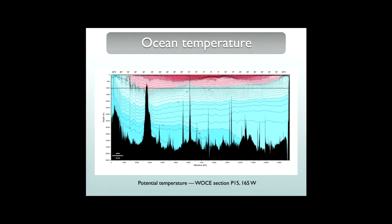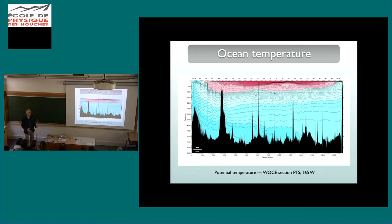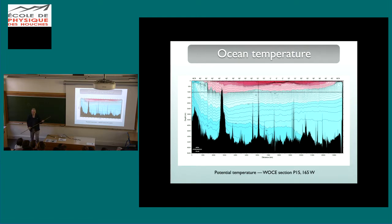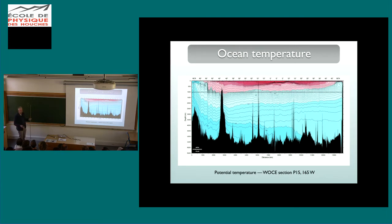First, we want to know what the deep ocean is. I'll start with an operational definition. This is a section across the Pacific Ocean collected during the World Ocean Circulation Experiment in the 1990s — a modern section. We're looking at temperature: depth from the surface all the way to the ocean bottom. This is section P16, across the Pacific, from around Antarctica all the way to the Bering Strait to the north.